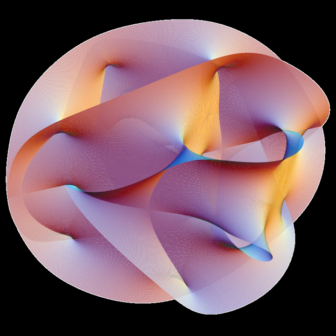In algebraic geometry, a moduli space is a geometric space, usually a scheme or an algebraic stack, whose points represent algebra-geometric objects of some fixed kind, or isomorphism classes of such objects.